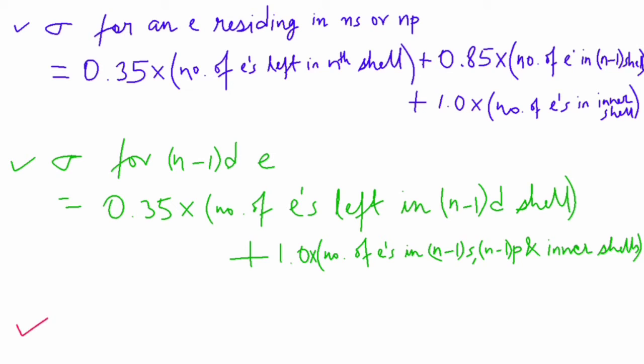If sigma is being calculated for an electron of 1s orbital, there will be a contribution of 0.30 from the other single electron in 1s orbital.